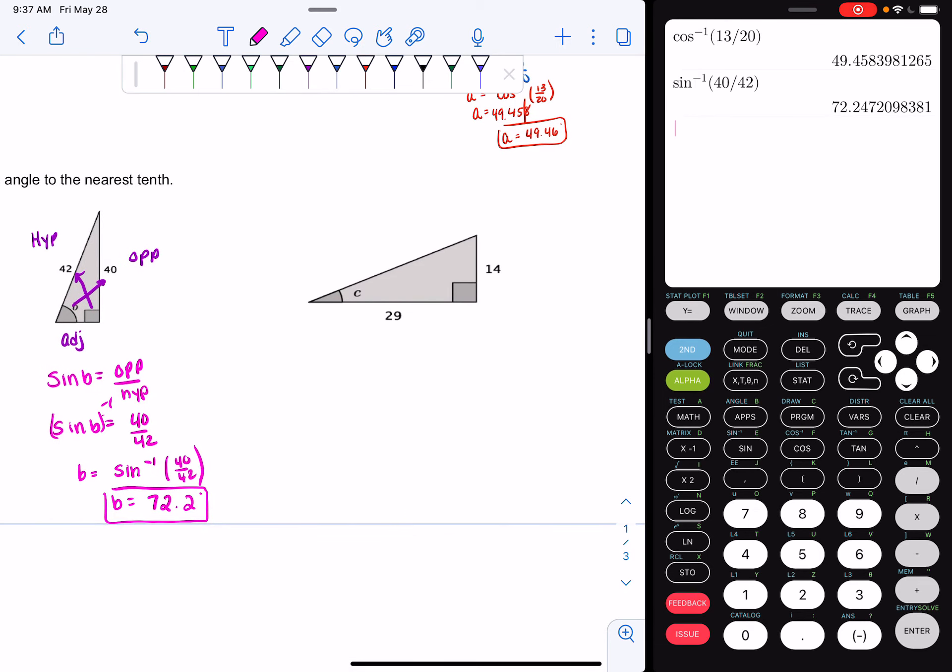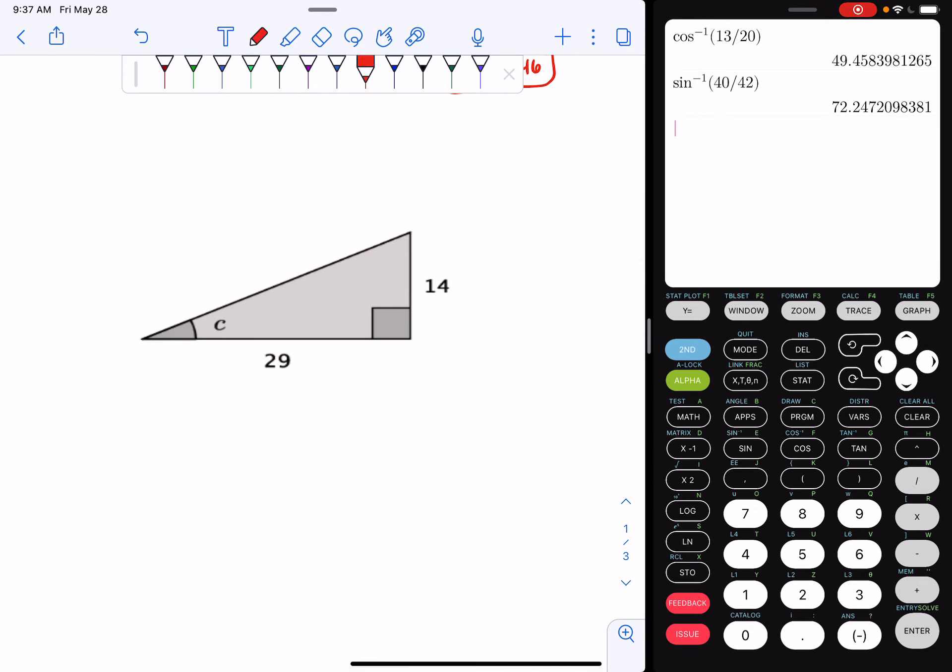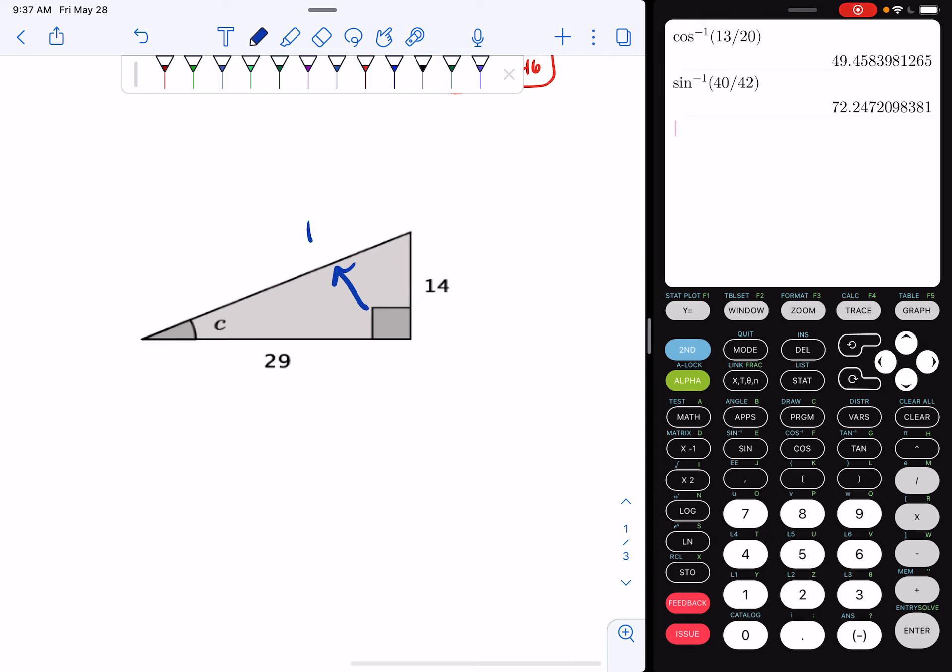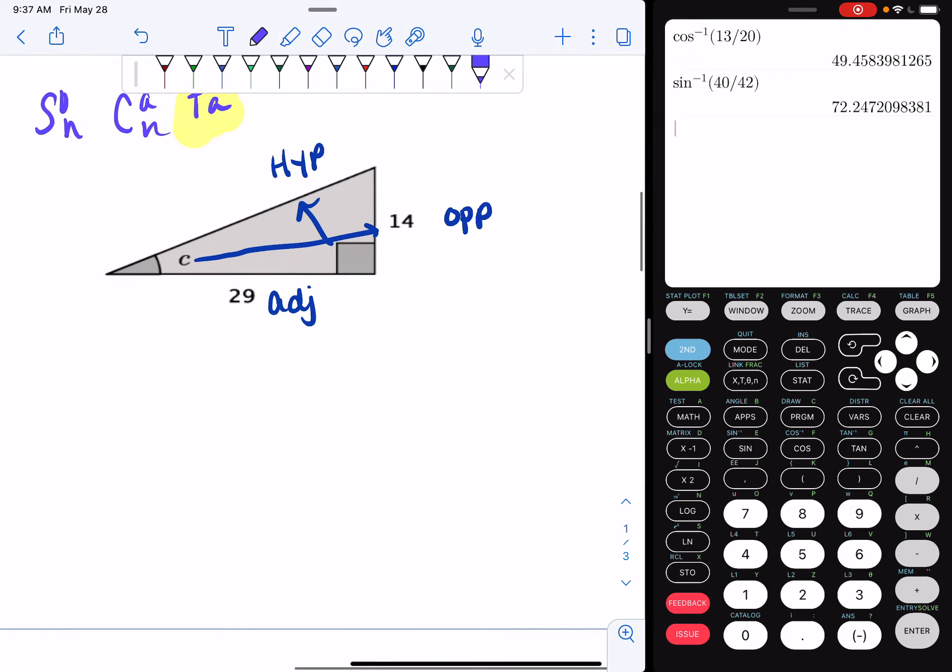Let's go on to our final example. First thing we do is we identify our hypotenuse across from our right angle. Now we identify our opposite. And then last but not least, we identify our adjacent. Now we figure out our trig function. So SOHCAHTOA. I have information about my opposite and my adjacent. So I'm dealing with tangent. So I can say tan of C is equal to opposite over adjacent. So I can say tan of C is equal to my opposite of 14 over my adjacent of 29.